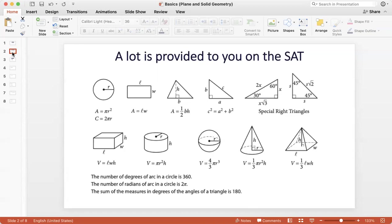For example, if they want you to find the volume of a cylinder, then they would mention in the question that the volume of a cylinder is given by V equals pi r squared h, and so on. So let's quickly look at what all is given to you on the SAT math section.